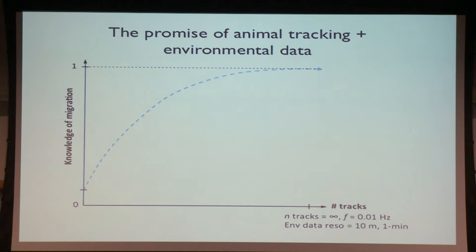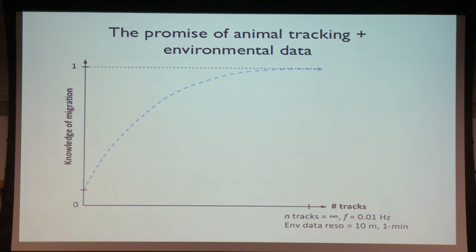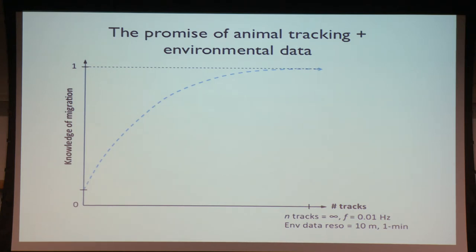The promise of environmental tracking: knowledge of migration is increasing upward toward perfect knowledge. If we have enough tracks — infinity tracks at high frequency with environmental data at 10-meter resolution and one-minute temporal resolution, plus heart monitors and many other sensors — we asymptotically approach perfect knowledge. That's the model.